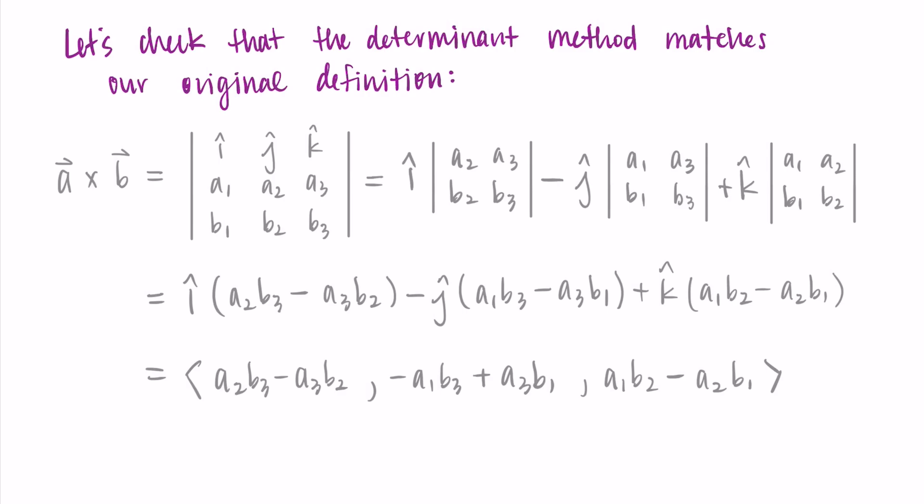So this is almost what we're looking for. It's just that middle part is backward. So I'm just going to swap those two so that I have A₃B₁ minus A₁B₃. And now I have my original definition of the dot product.